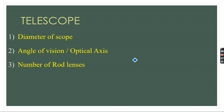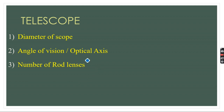In any telescope there are three important properties. First is the diameter of the scope — how much is the circumference of the telescope shaft. Second is the angle of vision, also known as the optical axis — the angle between the optical axis and the longitudinal axis of the scope. Third is the number of rod lenses: the more the number, the better the vision.